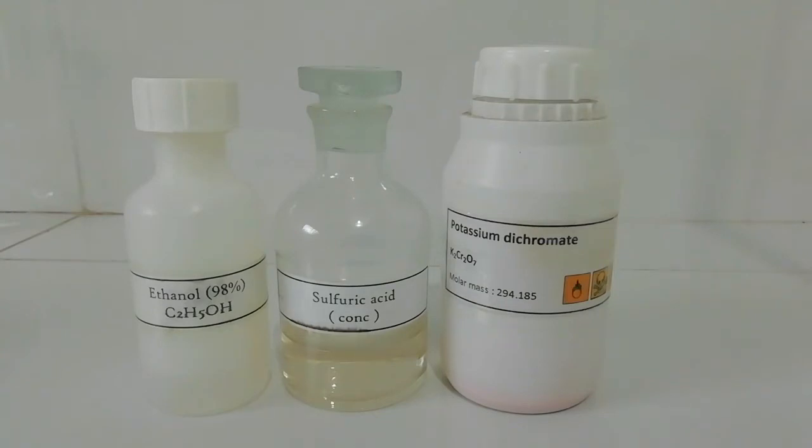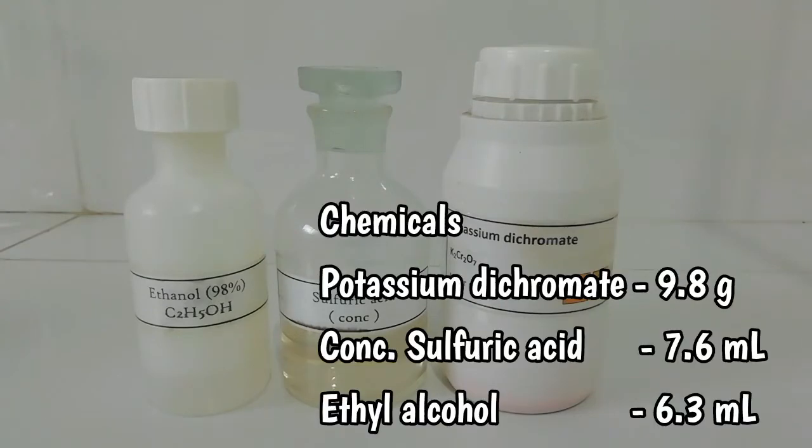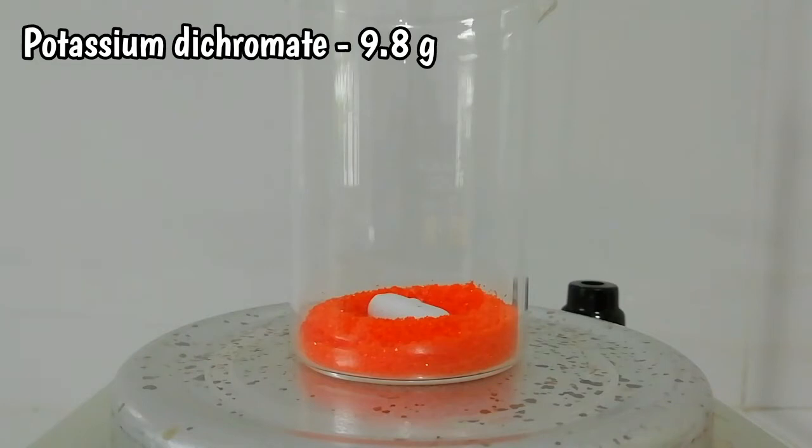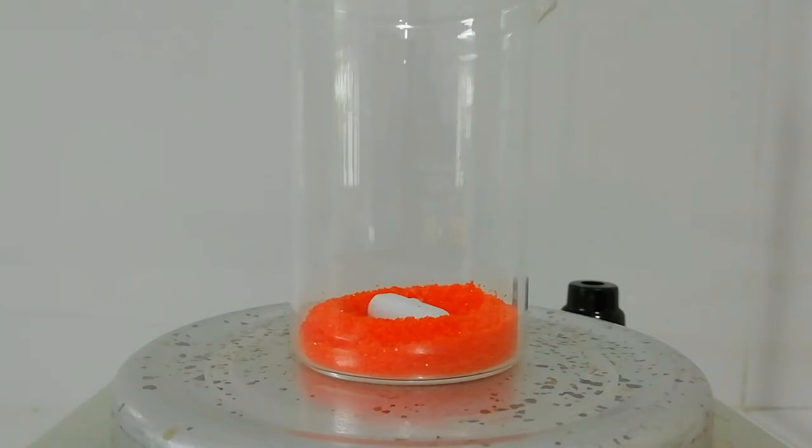To make this compound we need three chemicals: potassium dichromate, ethanol, and concentrated sulfuric acid. To start the reaction, I have taken 9.8 grams of potassium dichromate. Now we need to dissolve this potassium dichromate in 40 milliliters of water.